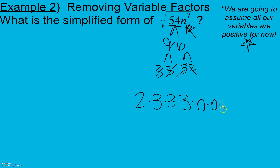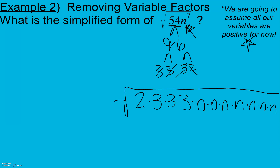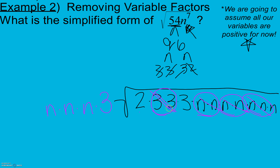I also have n to the 7th power inside, which means n times itself 7 times. Because everything started inside a square root, it stays inside my square root. Now I look for pairs: I don't have a pair of 2s, but I have a pair of 3s that comes out as a 3, then a pair of n's that comes out as an n, another pair of n's as an n, and another pair of n's as an n. Once they come out, they're no longer inside the radical.